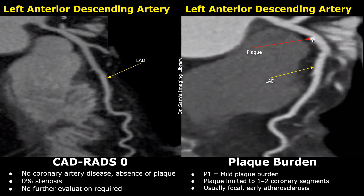There was an update in the CADRADS system which includes plaque burden separately from the CADRADS score. It describes the overall amount of atherosclerosis seen on coronary CTA — that is, in how many segments the plaque is present.